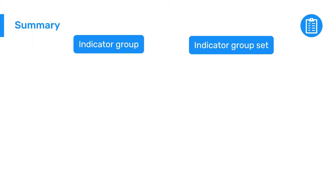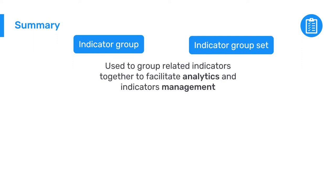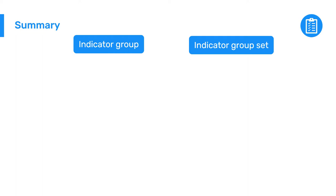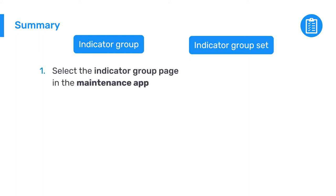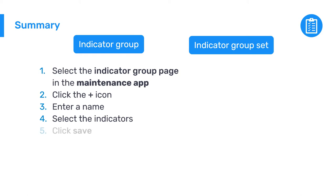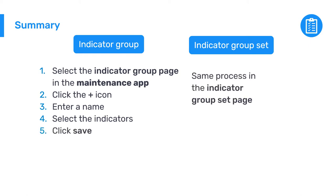To wrap up, indicator groups and group sets are used in DHIS2 to group related indicators together to make it easier to use them in analytics and to manage them in the maintenance app. To create an indicator group, go to the indicator group page in the maintenance app, click the plus icon, enter a name, select the indicators to be grouped, and click save. To create an indicator group set, follow the same process in the indicator group set page to select the indicator groups to be grouped together.